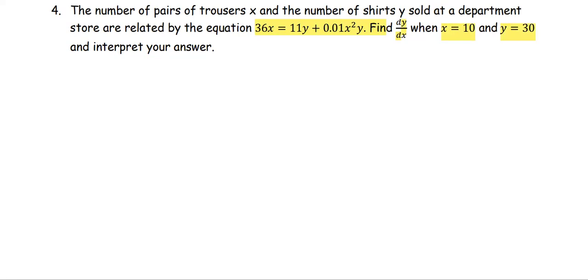which is the rate of change of the number of shirts per the number of pairs of trousers. We're going to find dy/dx by using implicit differentiation. The equation is 36x = 11y + 0.01x²y.